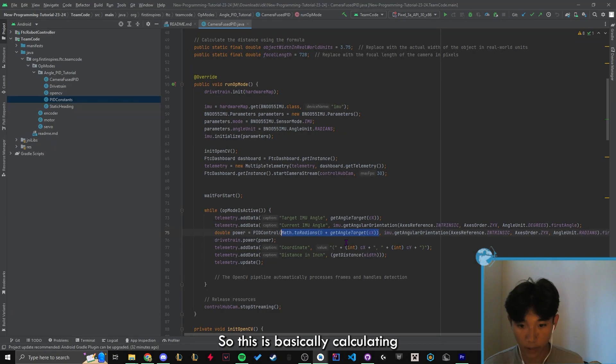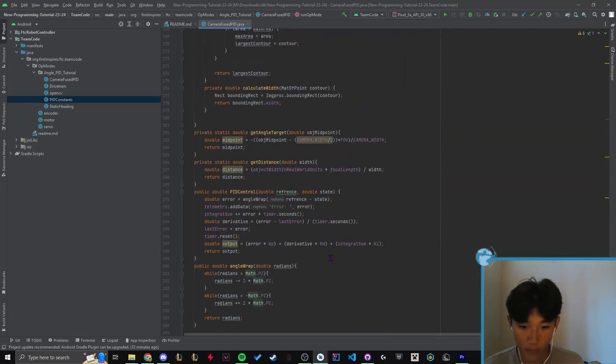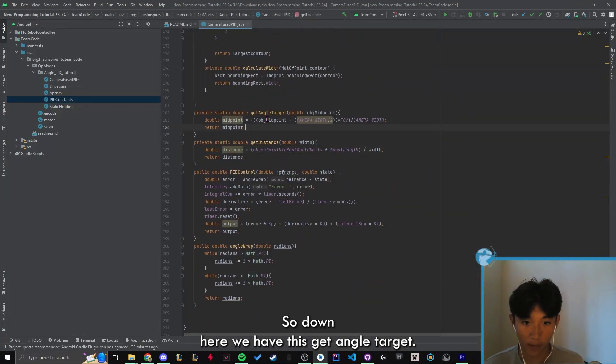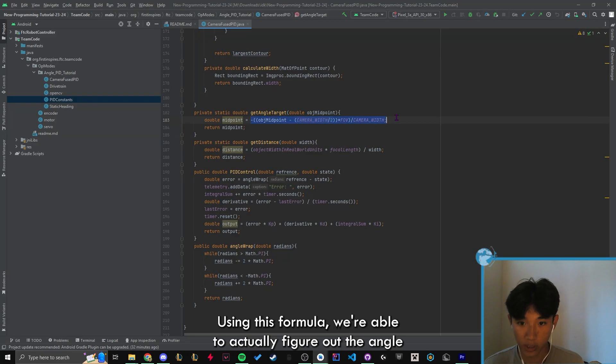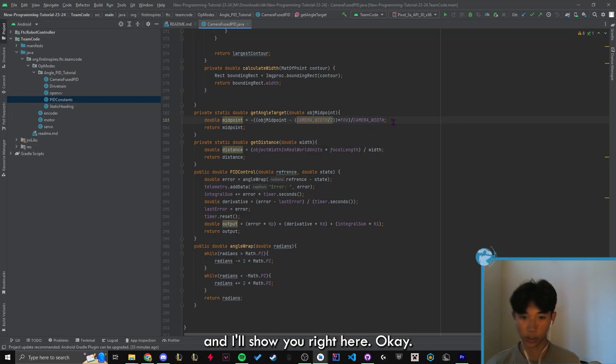So down here we have this getAngleTarget. Using this formula we're able to actually figure out the angle and I'll show you right here.